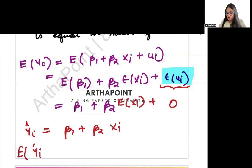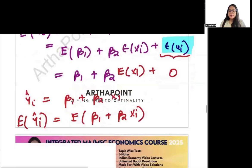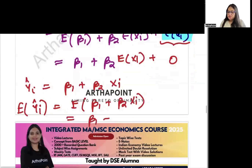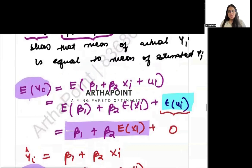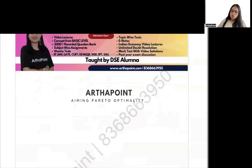And you can just say E of yi hat will be E of beta 1 plus beta 2 xi. And then you will just get the same thing, beta 1 plus beta 2 E of xi. So ultimately, we have proved that the expected value of the yi hat and the expected value of yi, both of them are same thing. There are many ways to prove this thing.